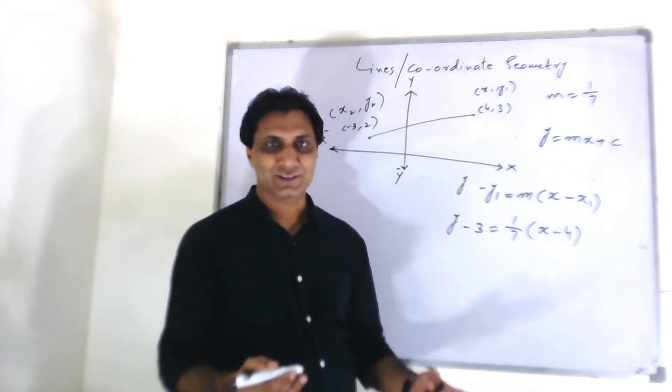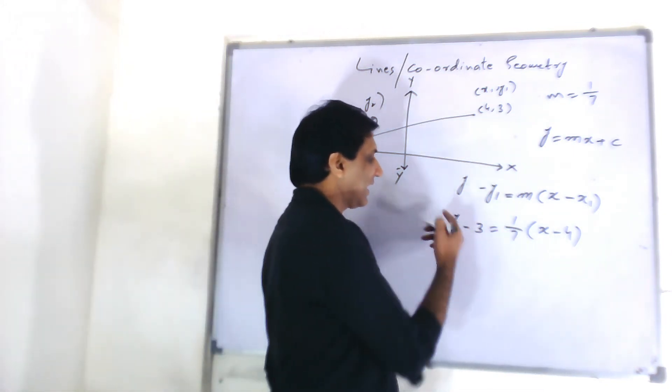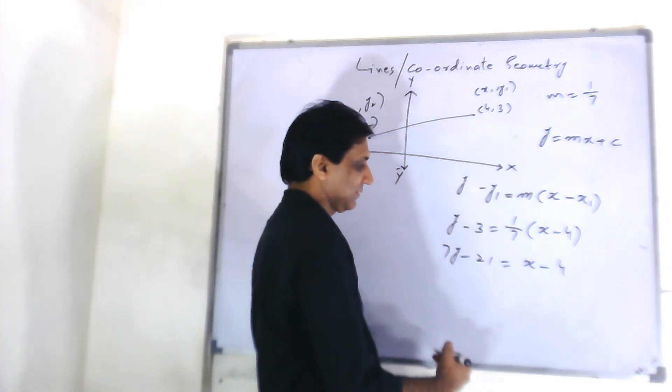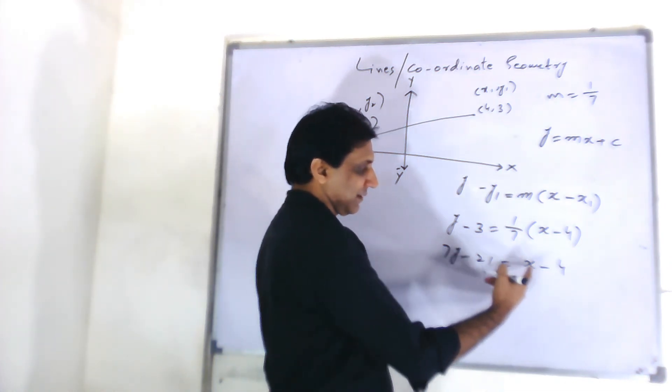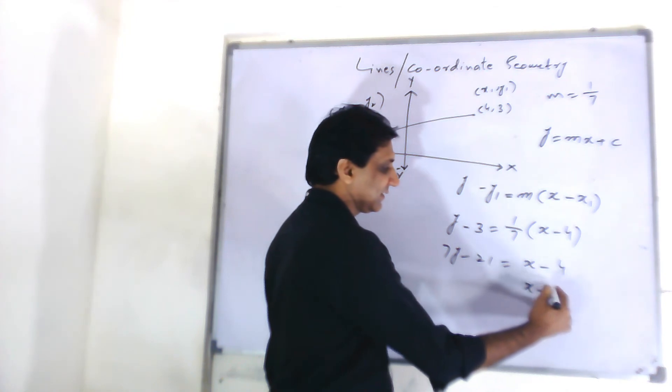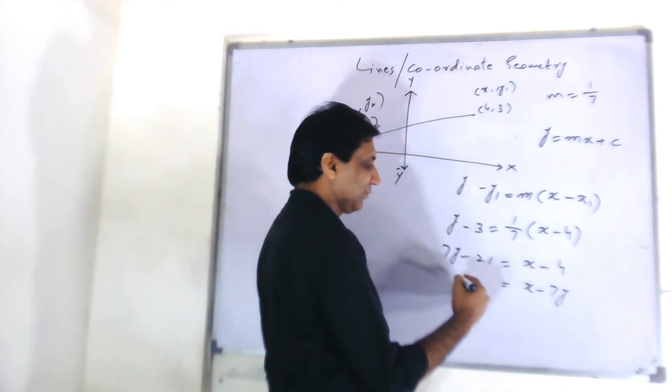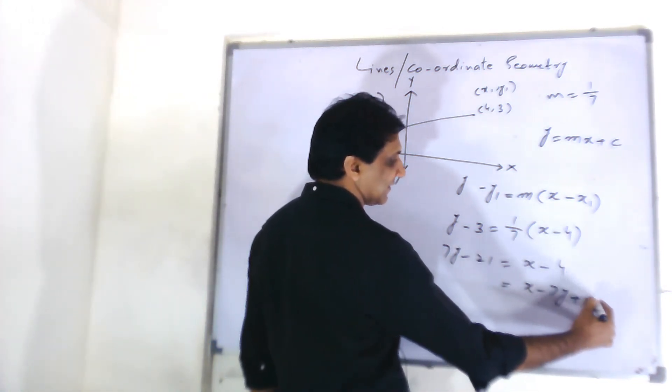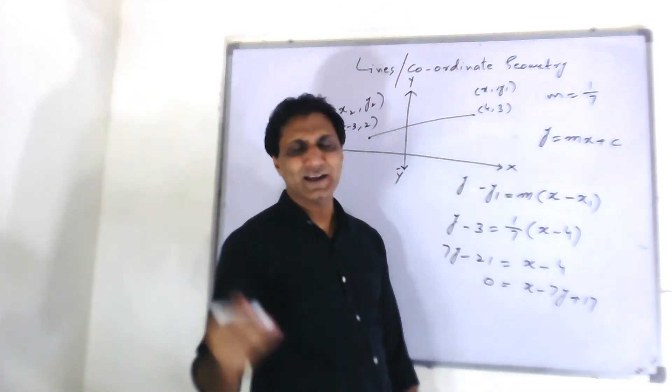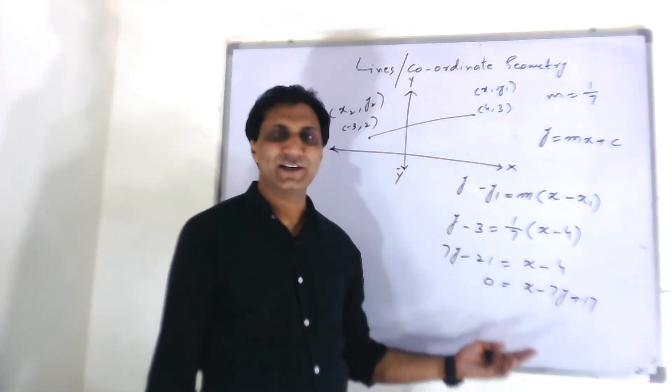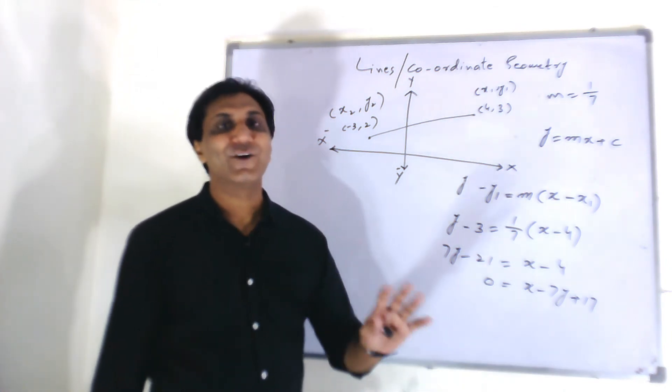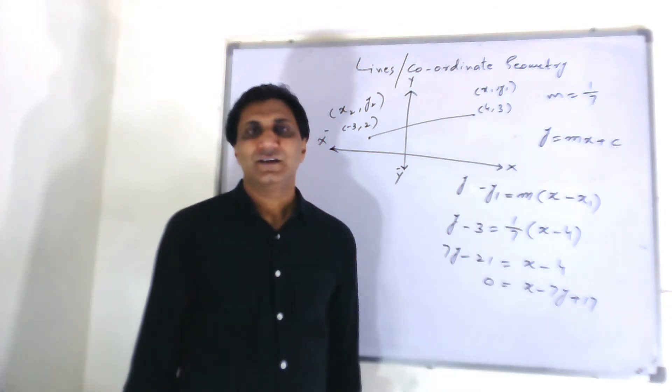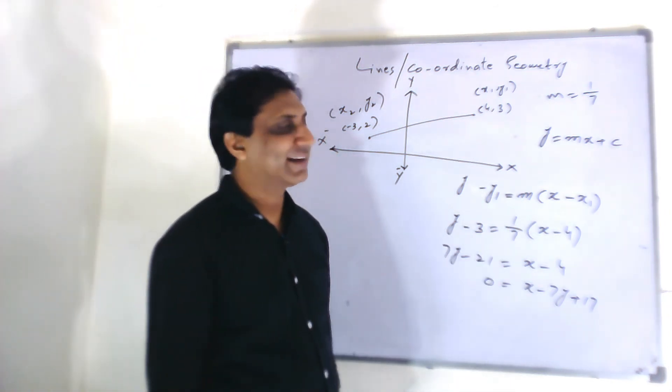In an equation, X, Y are a must. So, 7 times Y minus 7 times 3 is 21. X minus 4. So, X minus 7Y is equal to 4 minus 21 or bring that 21 there. 21 minus 4 will be plus 17 is equal to 0. So, you can write the equation in any form. The main thing is how to find it out. The expression, the form of expression is secondary thing. So, this is one way of finding out the equation.